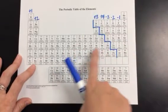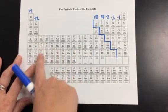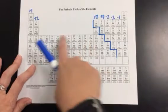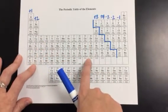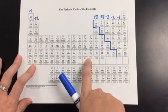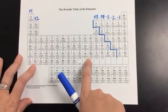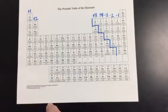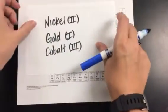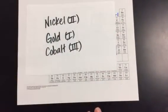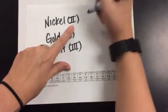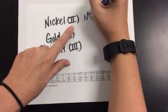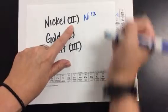Now looking at your periodic table, there's a big group of your transition metals. With all of your transition metals, those charges are going to be different depending on how it's bonding. So with your oxidation numbers, they're going to have to be given to you in Roman numerals. If something says that it's nickel 2, that means that you have nickel with a positive 2 charge.